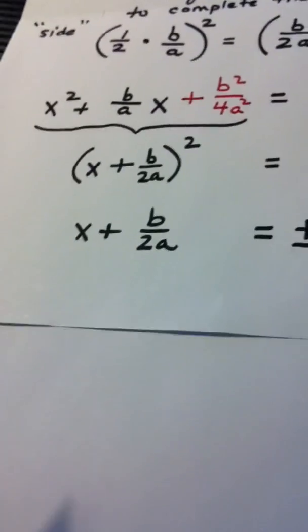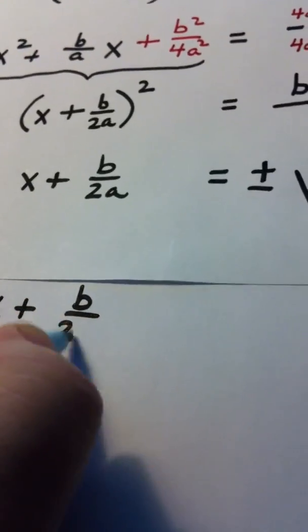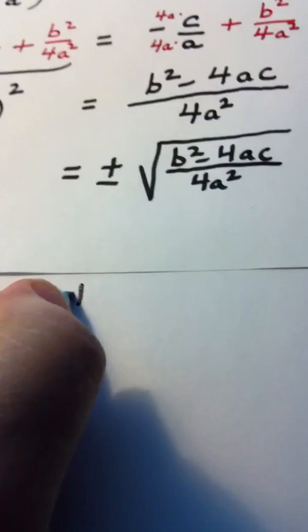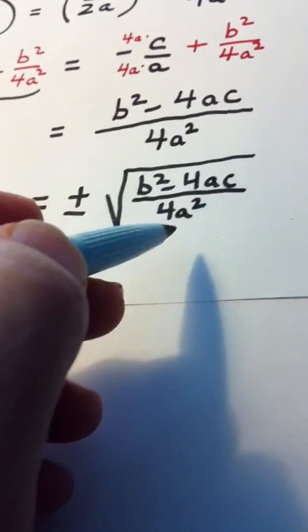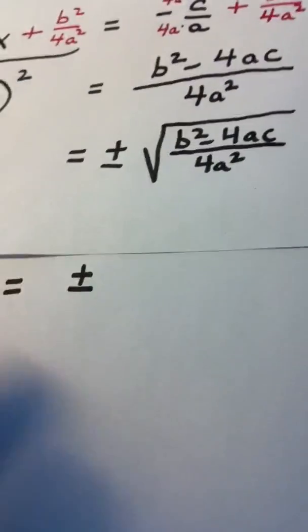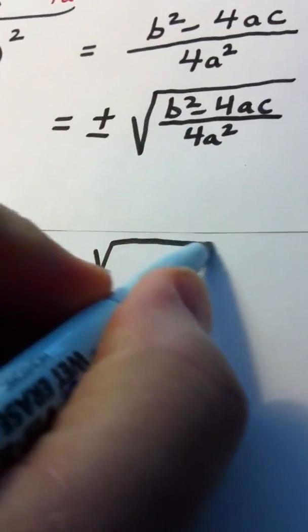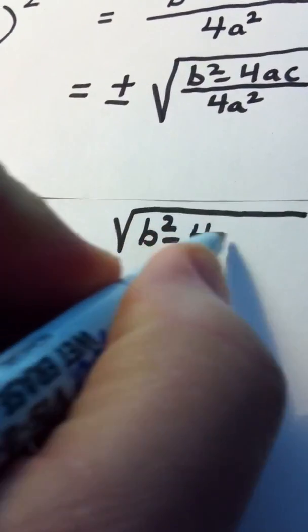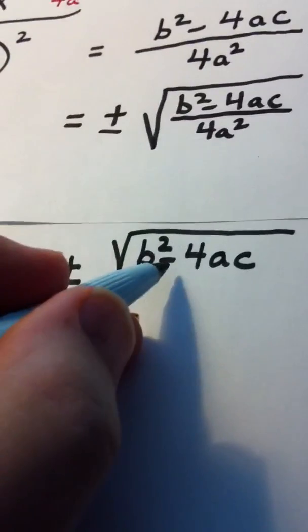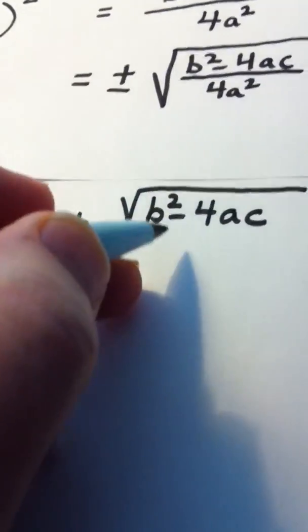So let's continue. We now have x plus b over 2a is equal to plus or minus. Whenever I take the square root of a fraction, I really take the square root of the top divided by the square root of the bottom. Well on top, when I take the square root of b squared minus 4ac, that's as far as I can go. The minus precludes me from splitting this apart.